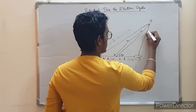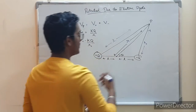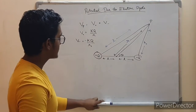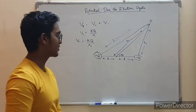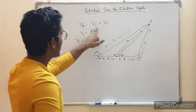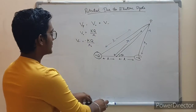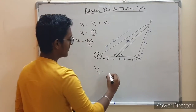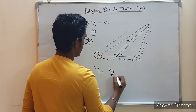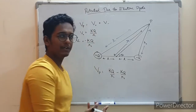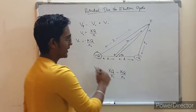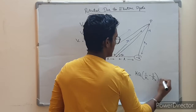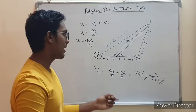To find the potential at P, we add the individual potentials. The effective potential VP equals kq/r1 minus kq/r2. Since the magnitudes of the charges are equal, we take q outside: VP = kq(1/r1 − 1/r2). This is the equation we need to substitute r1 and r2 into, expressing them in terms of r and L.